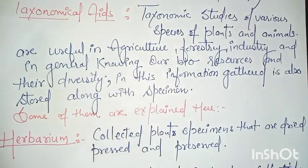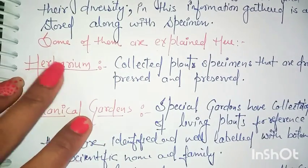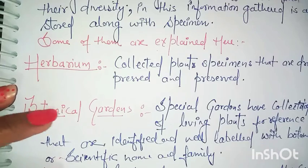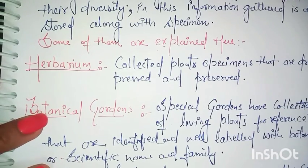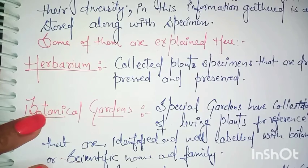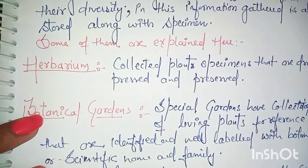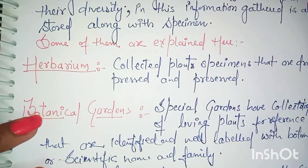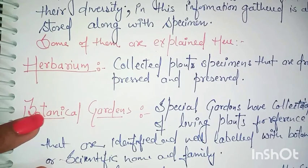We will look at them one by one. First we have a herbarium. What happens in a herbarium? Plant species are dried, pressed, and preserved. A sheet is kept under them, and then they are classified and kept for future use.